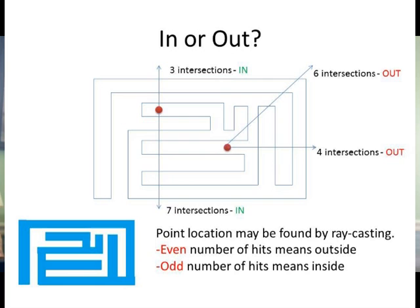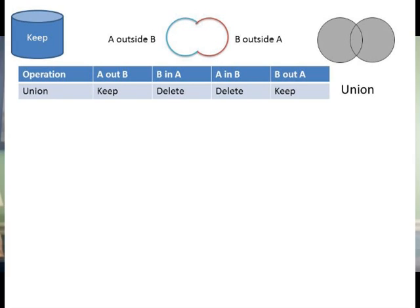Finally, we have to decide which regions to keep and which to delete. This varies depending on the type of boolean operation. Remember, we are only concerned with the outer boundary of the resulting shape. So, for a union operation, we want to keep the regions A outside B and B outside A, and delete the other two regions.